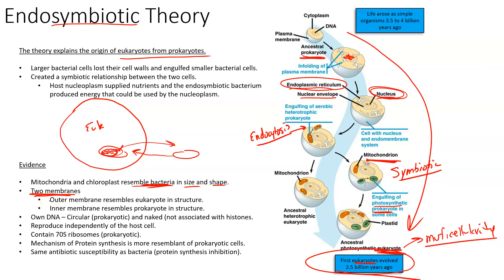Both mitochondria and chloroplasts are contained by two membranes, and what's even more important is that both membranes actually differ in their chemistry, biochemistry, and composition. The outer membrane resembles the structure of a eukaryotic membrane, and the inner membrane resembles that of a prokaryotic structure. If a bacteria pinched its way in by endocytosis, it should have an inner membrane resembling a prokaryote and an outer membrane resembling the eukaryote — because the eukaryote membrane would have engulfed and surrounded the inner prokaryote membrane when brought in by endocytosis.